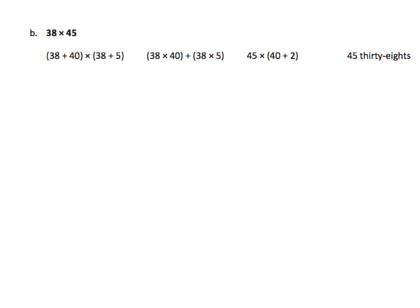38 plus 40 is 78 times 38 plus 5 is 43. We can see that both of our factors are bigger, especially if we look at this one and relate it to this one. We're certainly going to end up with a larger product than we would if we multiplied 38 times 45. The one thing that they're trying to fool you with here is if we had the addition sign here and we multiplied in here, it would be a different case. So watch the signs closely. We will circle that because it is not equivalent.